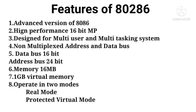It also has an address bus of 24-bit, meaning each location can be represented by 24 bits. Since its address bus is 24 bits, it has a memory of 2 raised to 24, which is equal to 16 MB memory. In addition to that 16 MB physical memory, it has one additional feature called virtual memory — it has around 1 GB virtual memory.